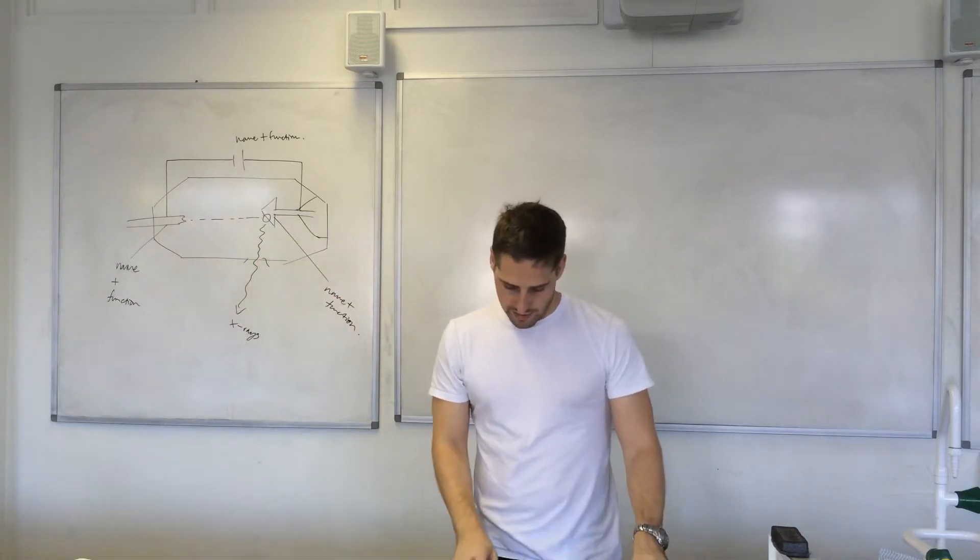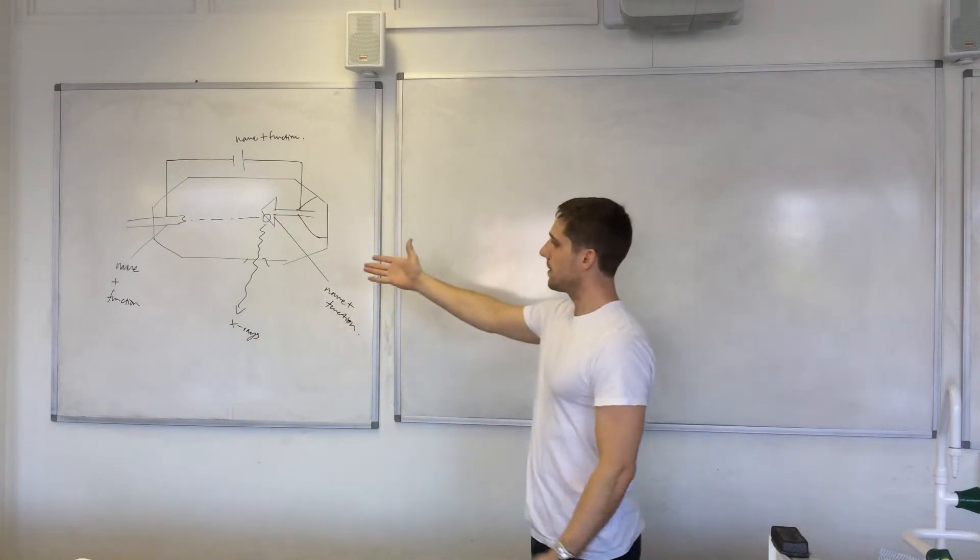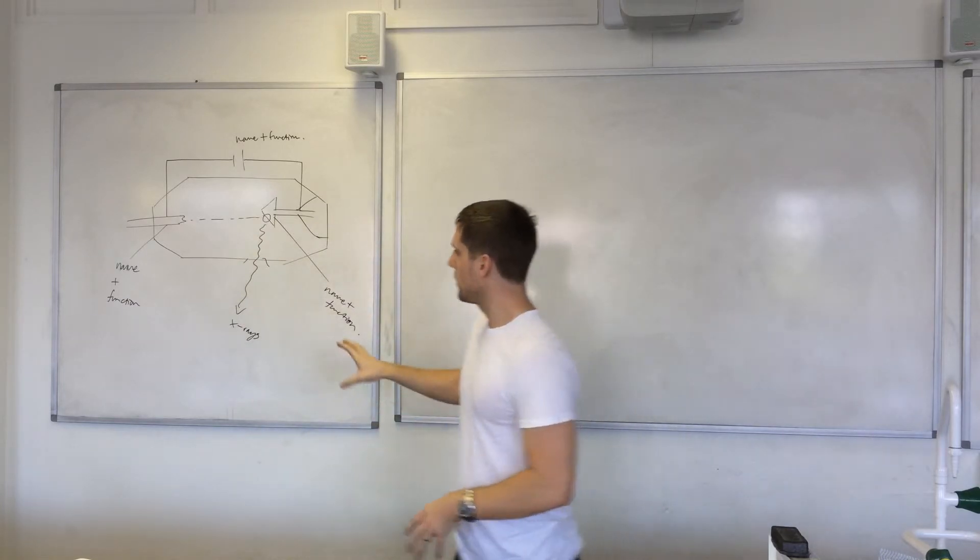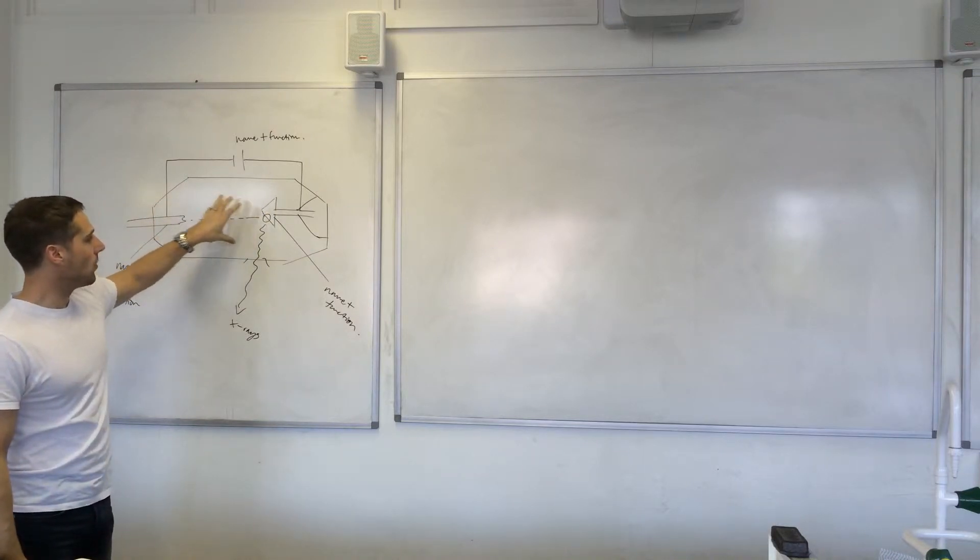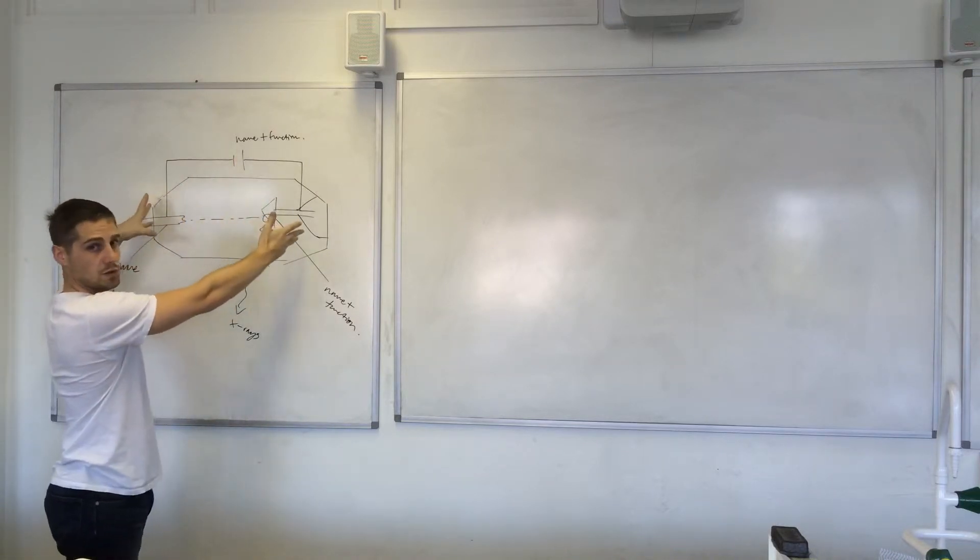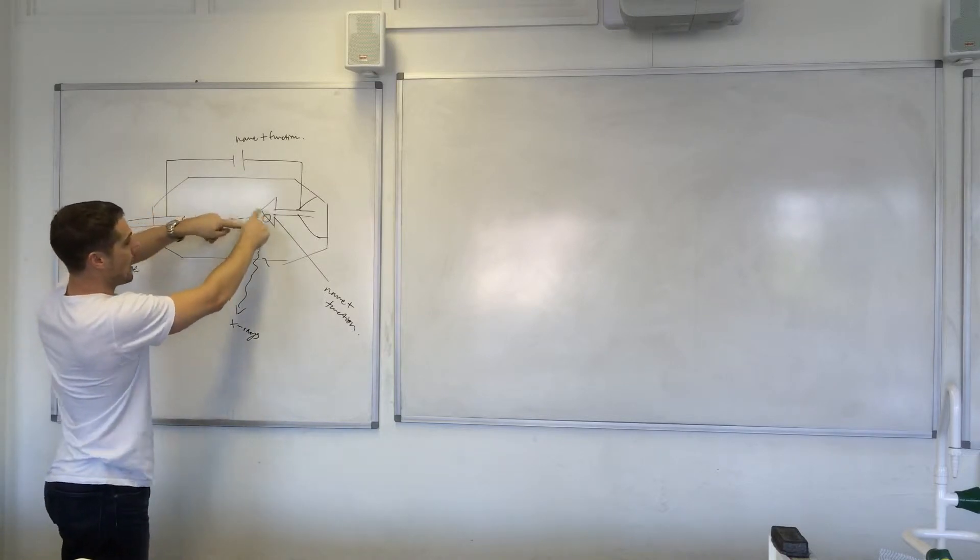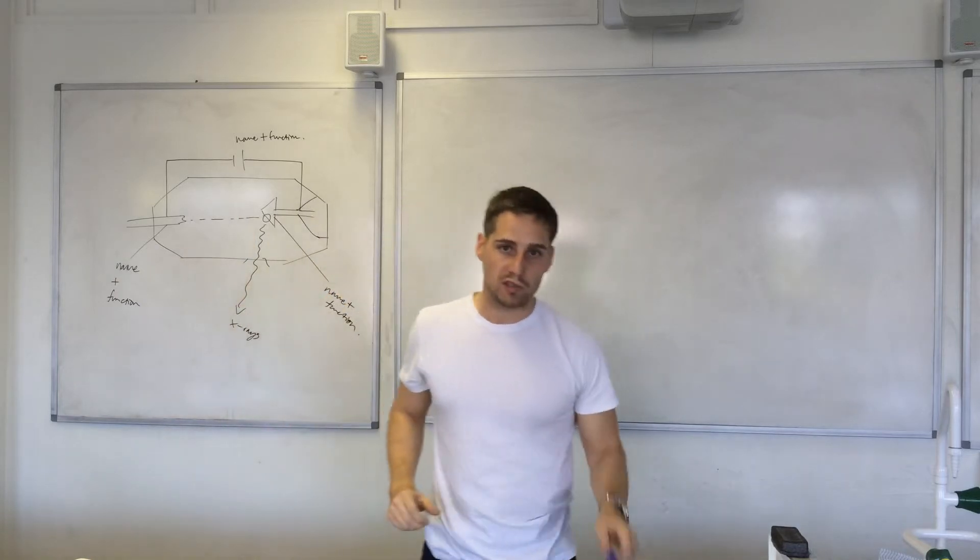That is your x-ray tube. So you need to draw that. Annotate it. And then describe the process of how x-rays are produced. So what this component does and what it produces. What this then does to the things that are being produced over here. What happens here. Now at this point you need to give some proportions of energy.